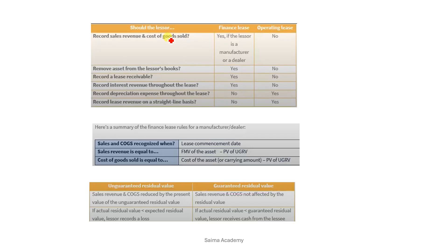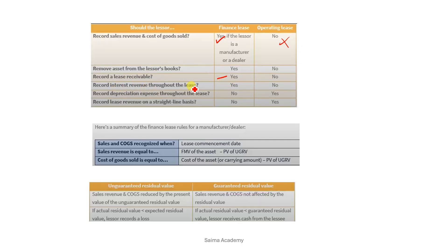Here is another classification. If the Lessor has a Finance Lease or Operating Lease, for Finance Lease we record sales revenue and cost of goods sold — yes, if the Lessor is a manufacturer or dealer; no otherwise. We remove the asset from the Lessor's books — yes for Finance Lease. We record lease receivable — yes for Finance Lease, not for Operating. We record interest revenue — yes for Finance Lease, not for Operating Lease.